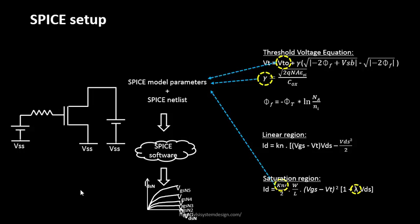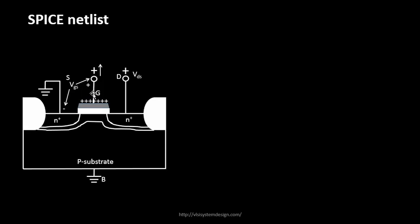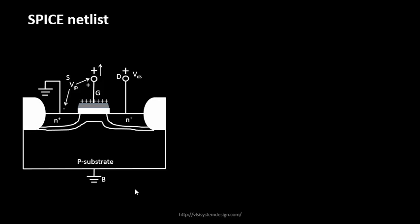Let's look into the details of the SPICE netlist. This is the MOSFET we have been working on, and its logical NMOS symbol can be described as follows. We identify each terminal: the drain, the source, the gate, and the substrate terminal VSB. We connect the drain to VDD so VDS spans from drain to source across the supply voltage.